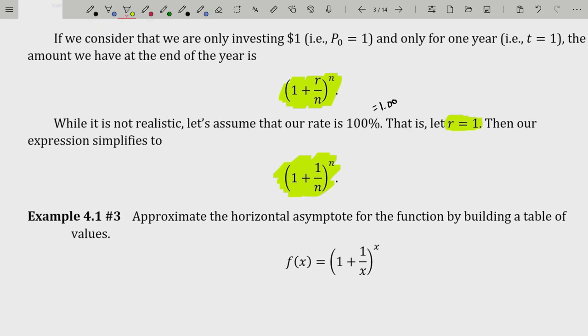Let's approximate the horizontal asymptote for this function by building a table of values. I've replaced n with x because when evaluating functions, we typically don't use n as the input variable—we reserve n for natural numbers, and functions are generally continuous. So f(x) = (1 + 1/x)^x is the same expression.